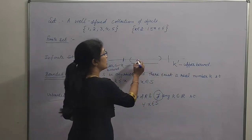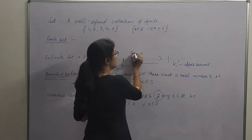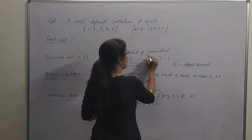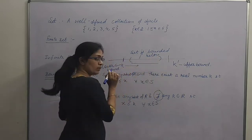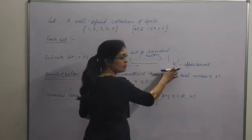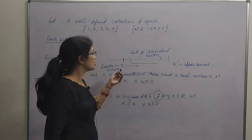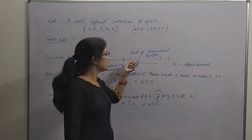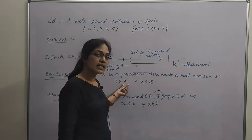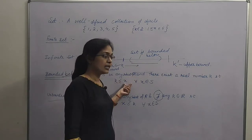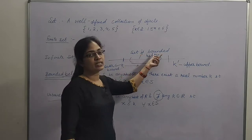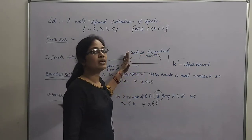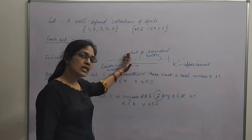Agar koi number upper side se bound karta hai set ko, toh usse kehte hain upper bound. Aur agar koi number lower side se bound kar raha hai, that is said to be lower bound. In elements ko hum kehte hain upper bounds or lower bounds. Aur is set ko kya kehenge? Set is bounded below if there exists a lower bound, and bounded above if there exists an upper bound.